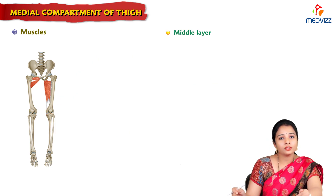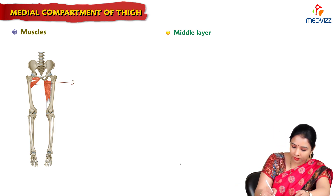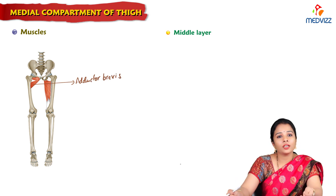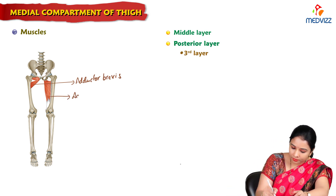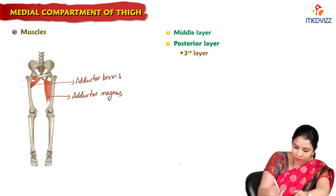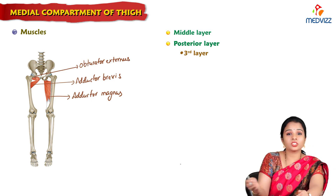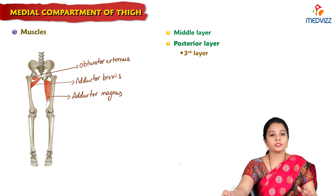The middle layer consists of adductor brevis — you can see adductor brevis here. The third layer consists of adductor magnus. We can also see obturator externus here, which functionally belongs to the gluteal region.